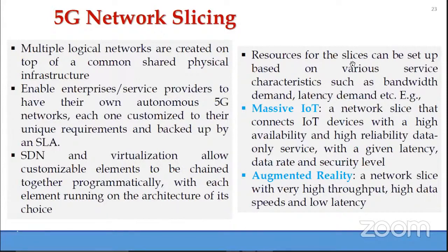Resources for each slice can be set up based on the application requirement. For a massive IoT application, we need a network slice connecting IoT devices with high availability, high reliability, given latency, data rate, and security level. For an augmented reality application, we need a network slice with very high throughput, high data speeds, and low latency.